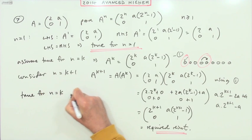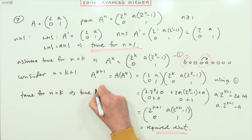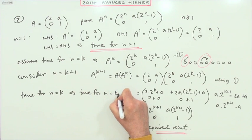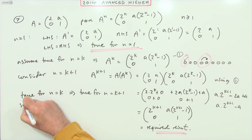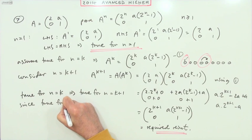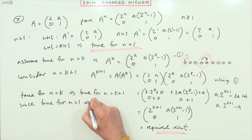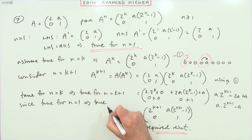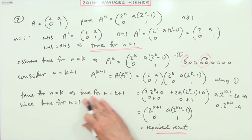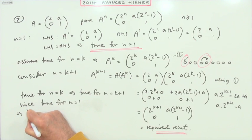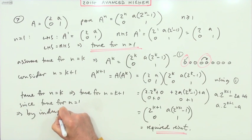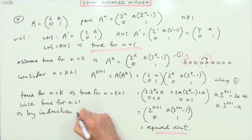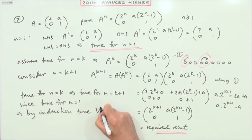True for n equals k meant it was in fact true for n equals k plus 1. That's what we just proved. But since it was true for n equals 1, that means—maybe I should put in the words—that means by induction it's true for all n greater than or equal to 1.